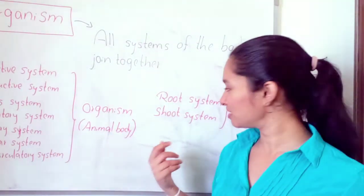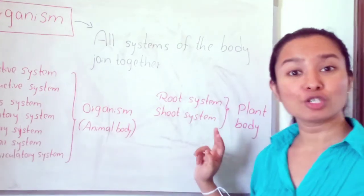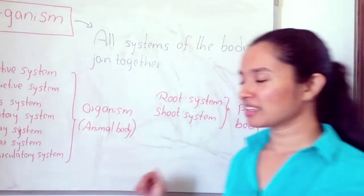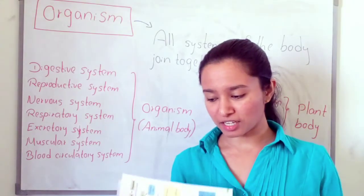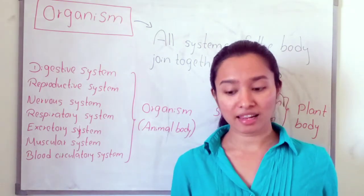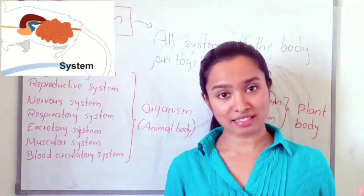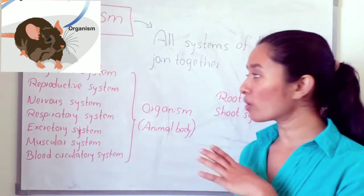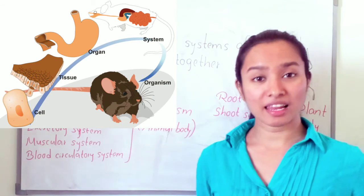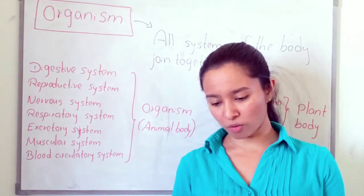In the plant body, there are two systems: root system and shoot system. So, we have discussed all the organizational levels: cells, tissues, organs, systems, and organisms. These are the organizational levels in the living body and this section is now complete.